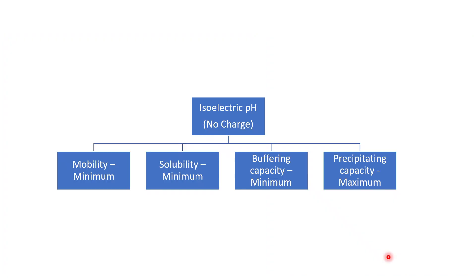Because of isoelectric pH, when there is no charge, proteins or amino acids acquire certain properties. First, mobility becomes zero because the molecule becomes nonpolar. Second, because it does not have any charge and is nonpolar, the solubility of the proteins is also minimum. The buffering capacity also becomes minimum, because all of these require the amino acid to have charge.